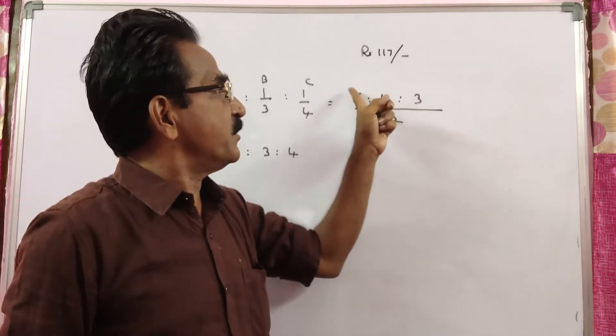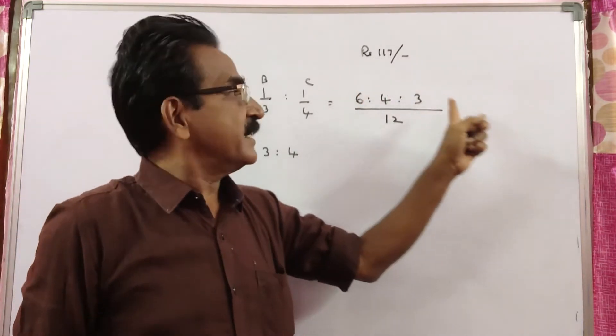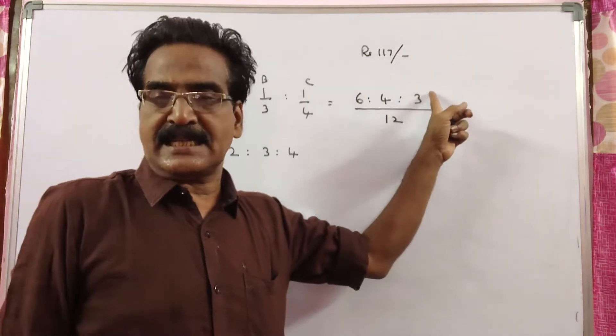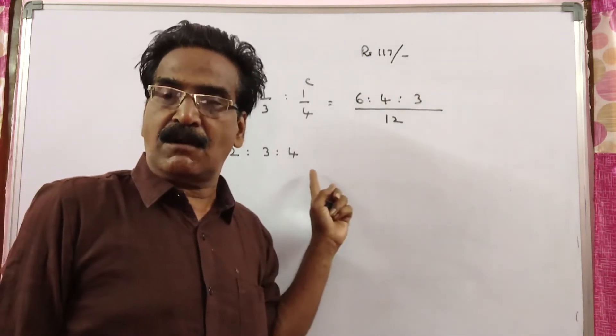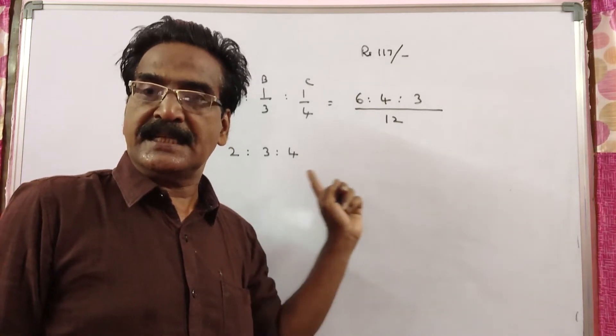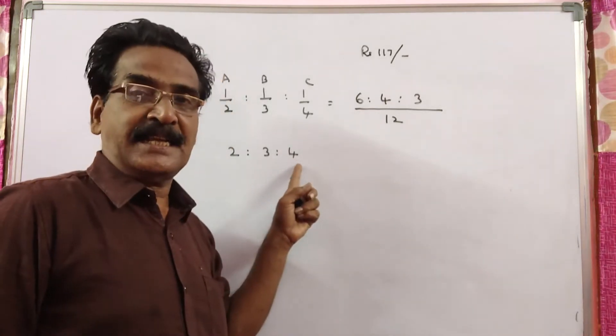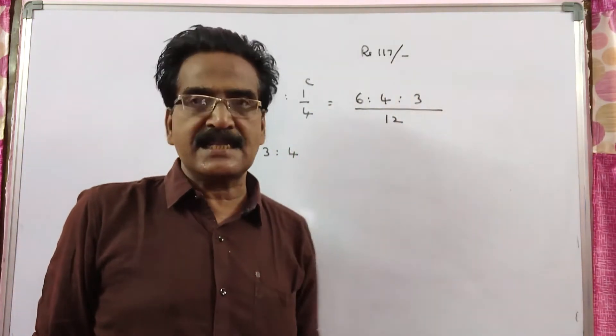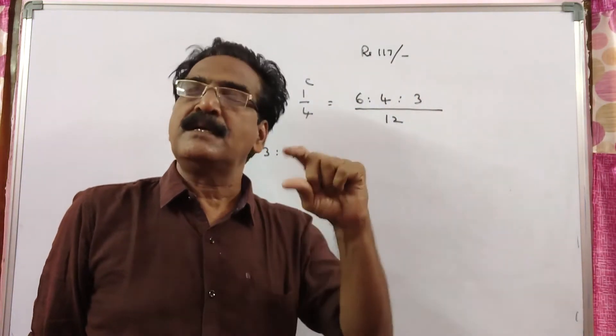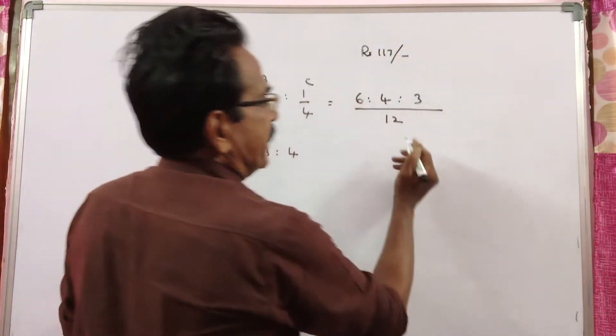So see friends, this ratio is in decreasing order. Here C gets the least. This ratio 2:3:4 is in increasing order. So C gets the most. So we can easily say that C gains the most. By how much?